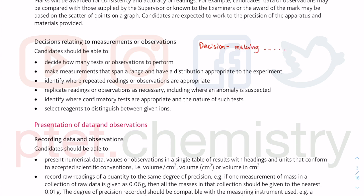Decision making: the first thing you need to decide in a practical exam is time. If the practical task is going to take a long time, you need to speed up a little bit — but not at the expense of bad handwriting, dirtying your question paper, or not writing your data in pen straight away. This is about titrations: how many test observations you need to perform. Sometimes you need to repeat to confirm, but sometimes you don't have time to repeat, so make sure that whatever you do for the first time, you get the correct observations.